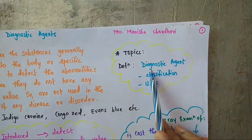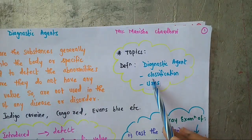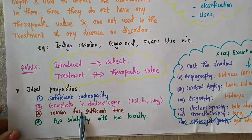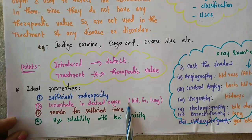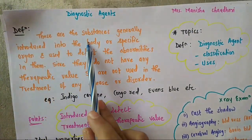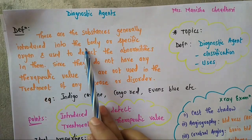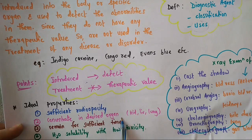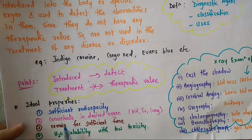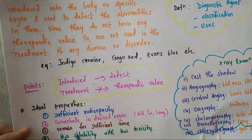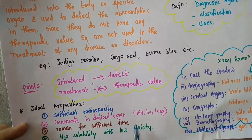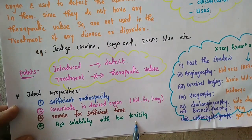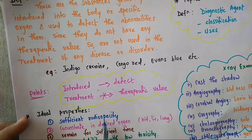We have finished with the diagnostic agent definition. Before moving to classification, we will see the general properties of diagnostic agents. Since they are introduced into the body, after introduction they should have the property to concentrate in the desired organ — say kidney, liver, or lung. They should remain in the body or organ for sufficient time, should be sufficiently water soluble with minimum/low toxicity, and should have sufficient radio opacity.